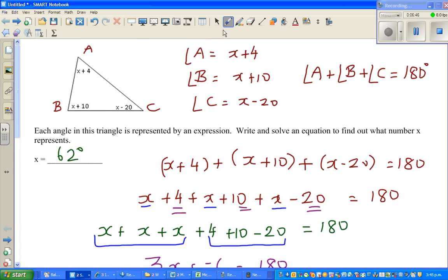Now let us see whether the answer makes sense. So if x is 62, this angle. So let me write here. So angle A is 62 plus 4, which is 66. Does it make sense?